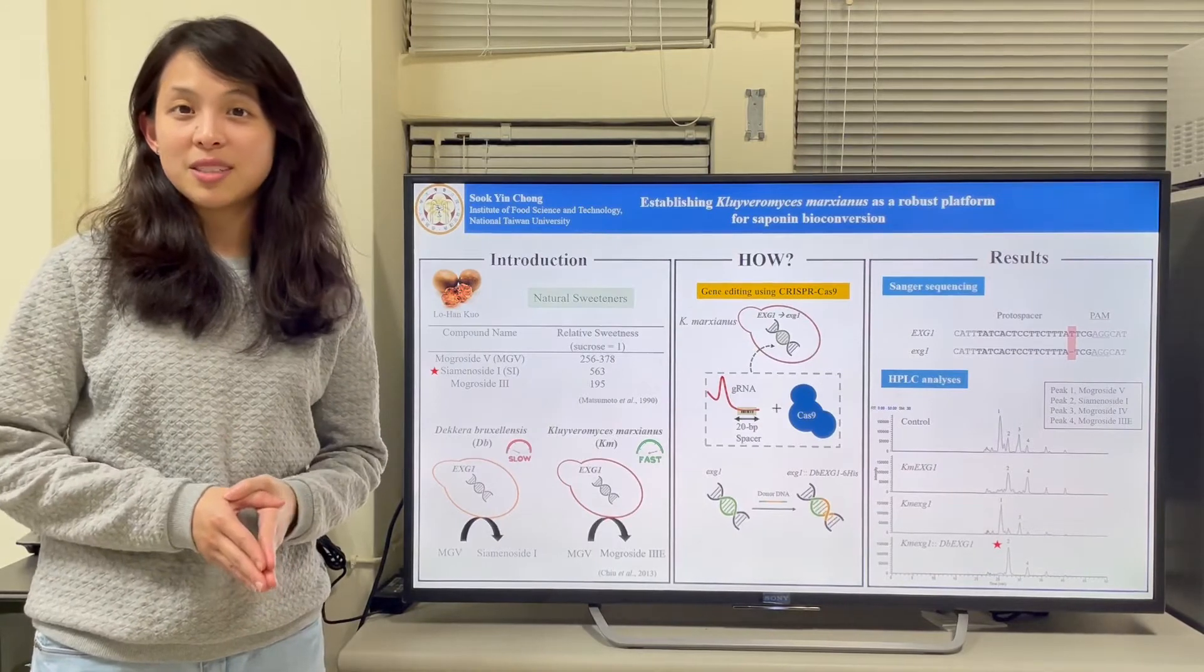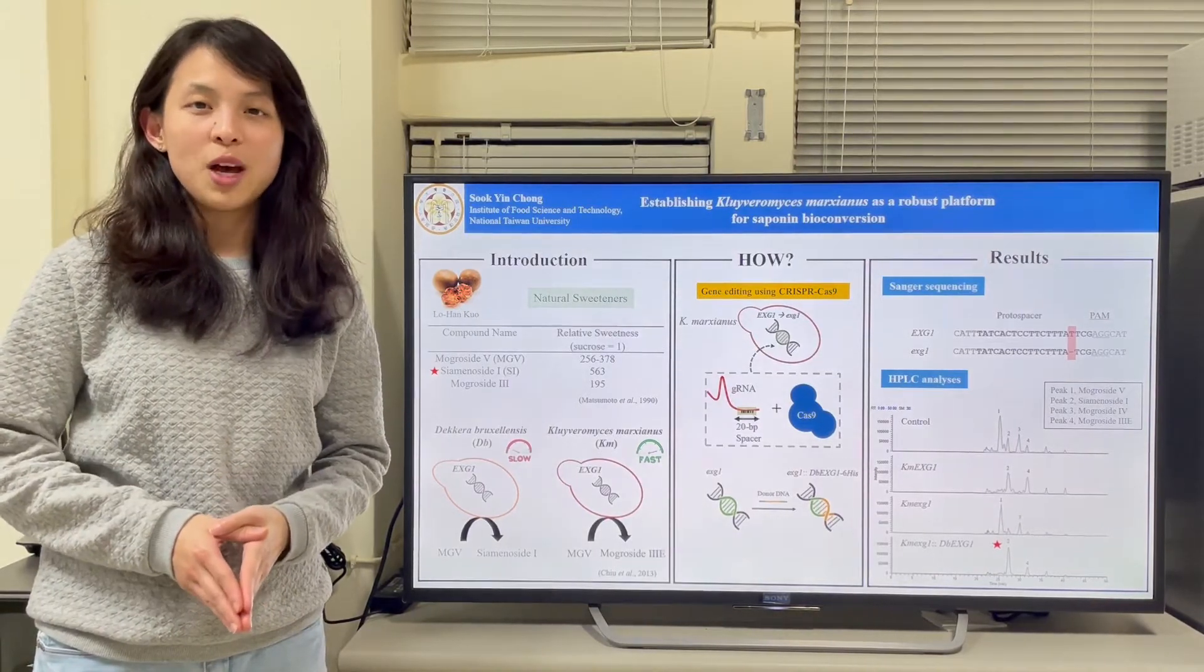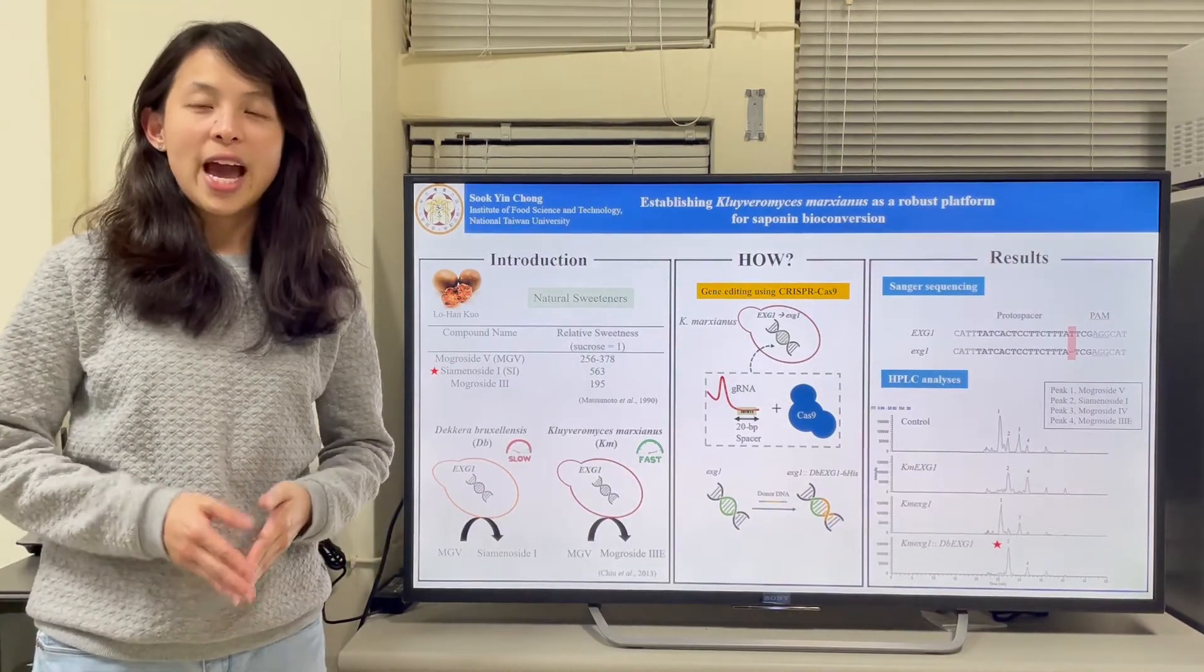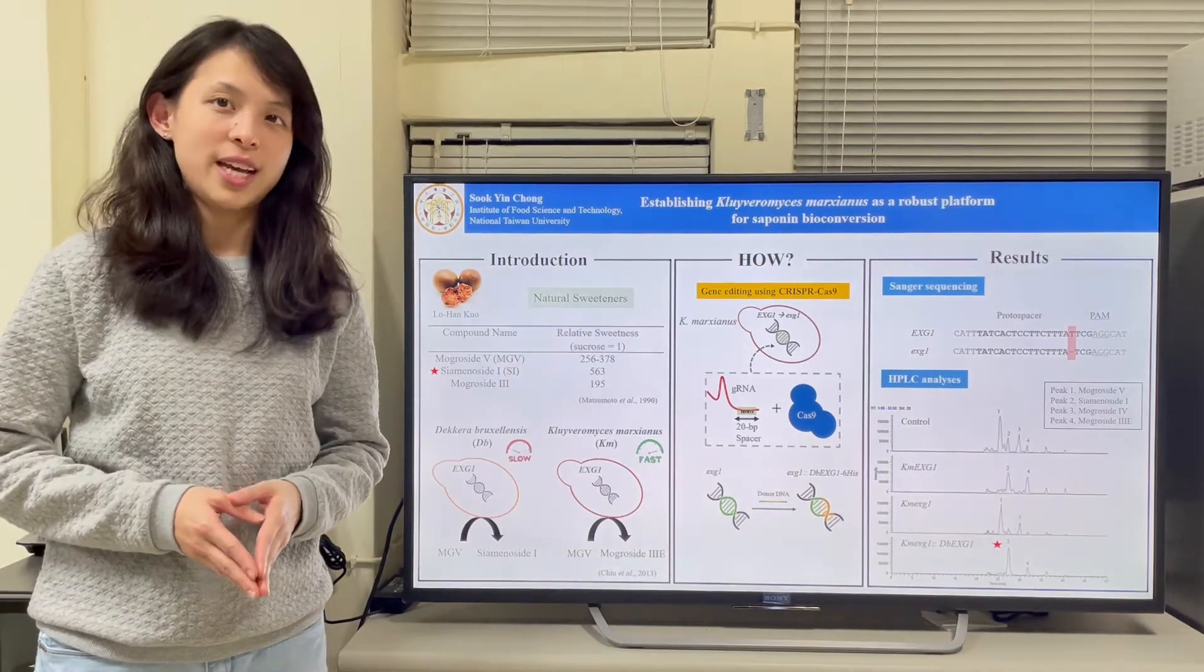Mogulcides are the major triterpenoid saponin found in the monk fruit, also known as Lu Han Guo, and it is responsible for the sweet taste.